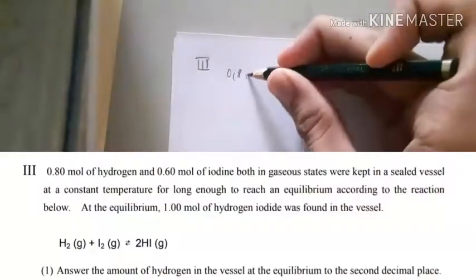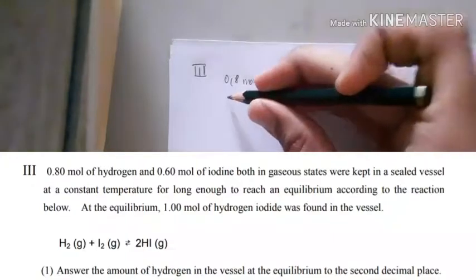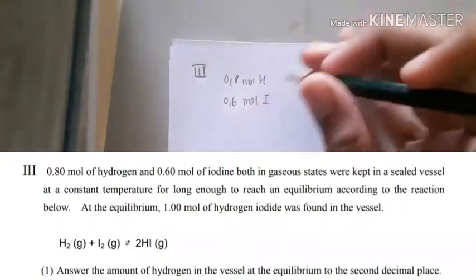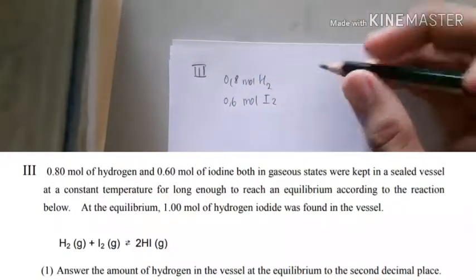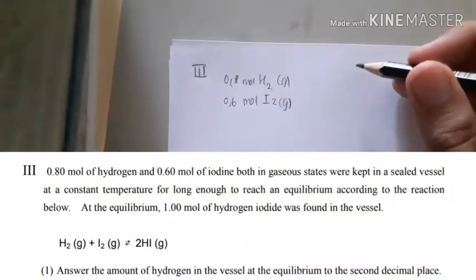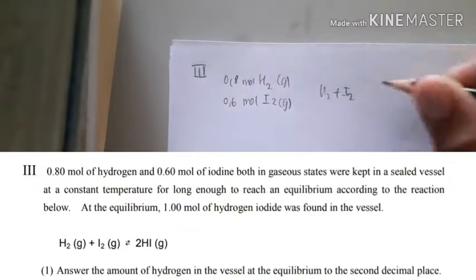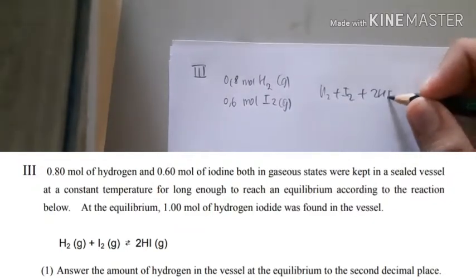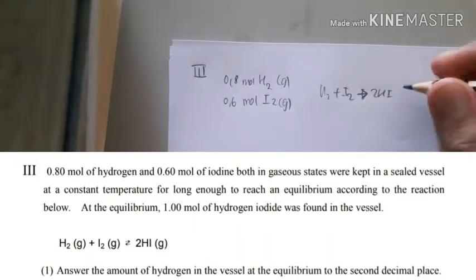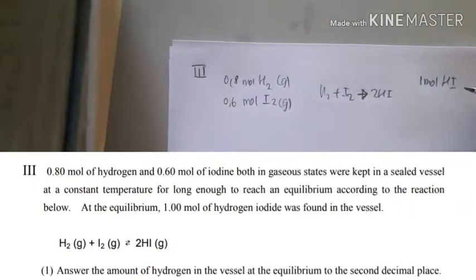The problem states: 0.8 moles of hydrogen and 0.6 moles of iodine in gaseous state are kept in a sealed vessel at constant temperature long enough to reach equilibrium according to the reaction H2 + I2 → 2HI. At equilibrium, 1 mole of hydrogen iodide is found in the vessel. We have to calculate the amount of hydrogen in the vessel at equilibrium to the second decimal place in moles.